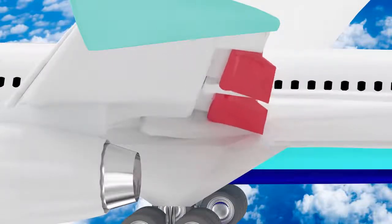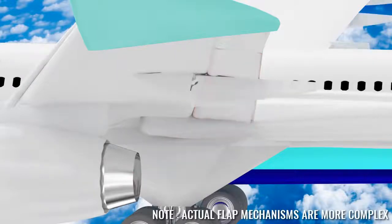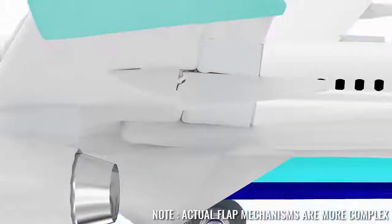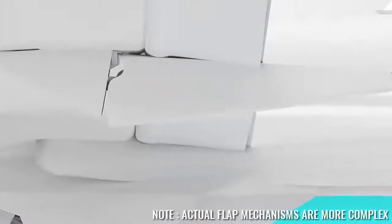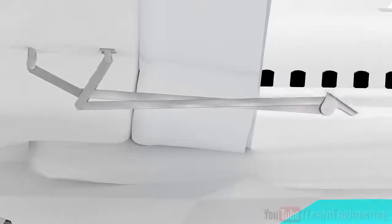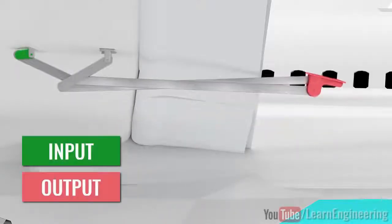Let's understand one of the simplest flap mechanisms that facilitates this motion. The specialty of this mechanism is that by moving just one link, we achieve the desired motion.